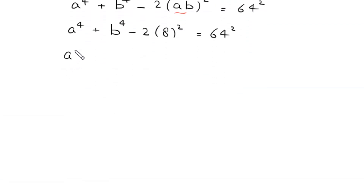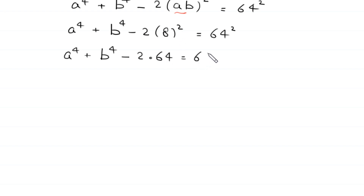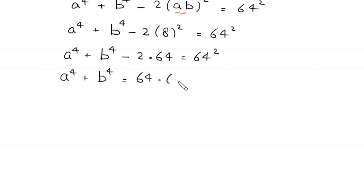Next, a to the power 4 plus b to the power 4 minus 2 times 64 equals 64 squared, which is 64 times 64. Moving the negative 2 times 64 to the right hand side, it becomes plus 2 times 64, giving us a to the power 4 plus b to the power 4 equals 64 times 66.